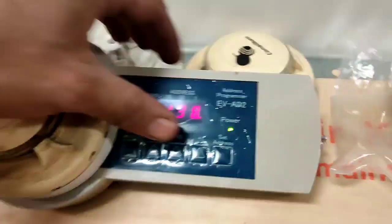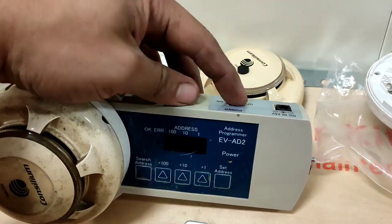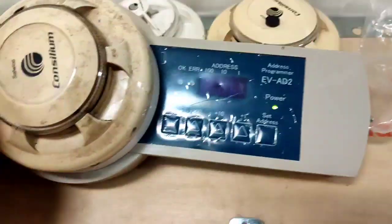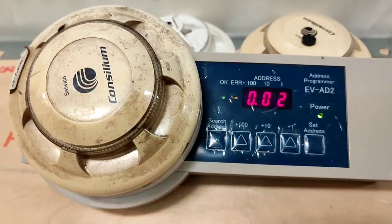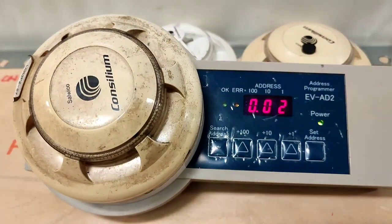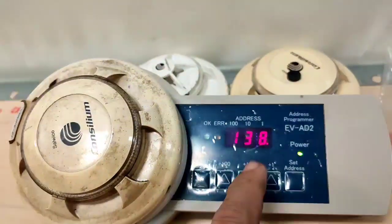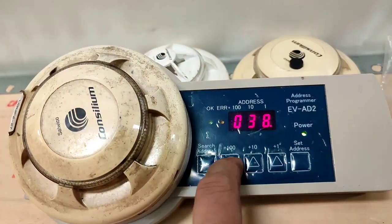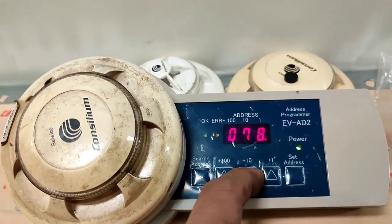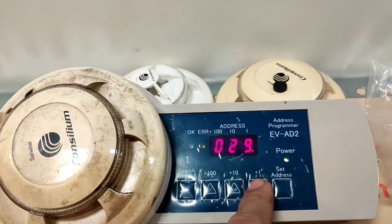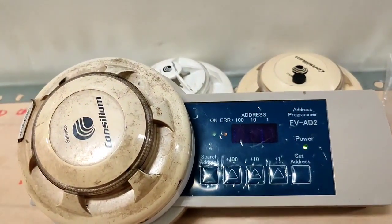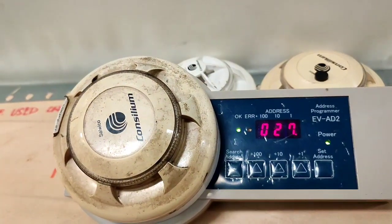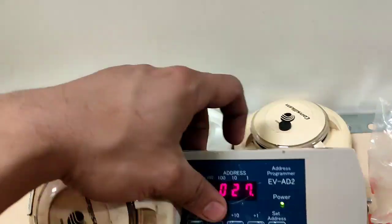And then okay, then turn off, then turn on. Then search address, we check, press search address. And then okay, previously 138. Okay, then back to 27, then set address. Then wait for the LED, okay, illuminates.